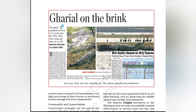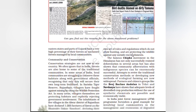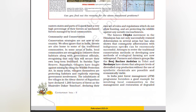The Kharil population has been at its lowest since the 1970s. Eastern states and parts of Gujarat have a very high percentage of forest as unclassed forests managed by local communities.